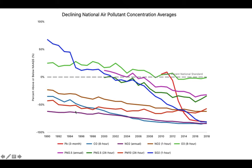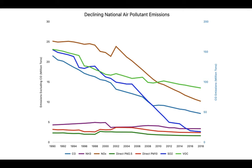If we look at the percentage increase or decrease, in 1990 a number of things were up to 50% or 75% above the national standard — that dotted line. But as we move toward more current time, like 2018, most of the air pollutants have dropped below the national standard, and some that were already low dropped even lower, which is great.